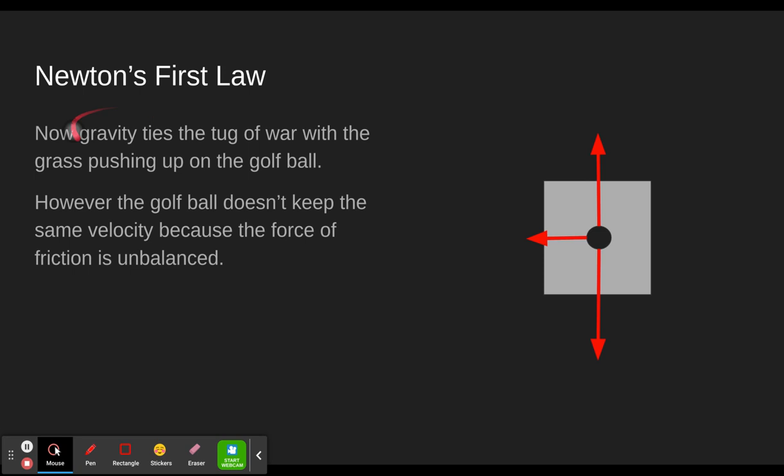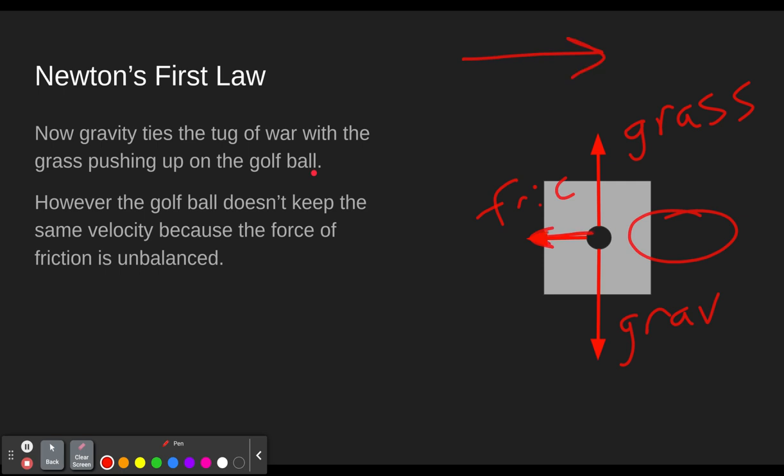So what forces are there? Well, now gravity is not going to be accelerating up and down because gravity ties the tug of war with the grass pushing up on the golf ball. So here's gravity, and here's the grass. But there's another force. It's that tricky force of friction. There is nothing pushing against friction. So friction will cause the ball to accelerate. In this case, the ball is moving right, friction is to the left, or the unbalanced force is to the left, so this ball would slow down, which you saw happen.